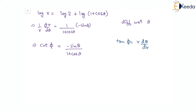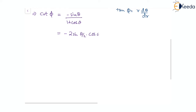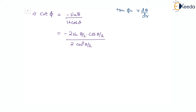This relation will become minus of two sin(θ/2) cos(θ/2) divided by two cos squared theta by two. We can cancel the two and also cancel one cos(θ/2), therefore we will have cot of phi equal to minus tan(θ/2).